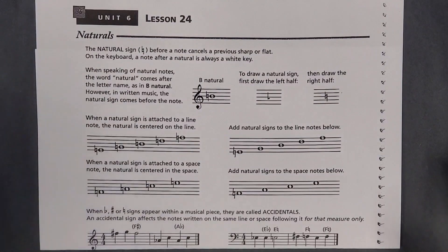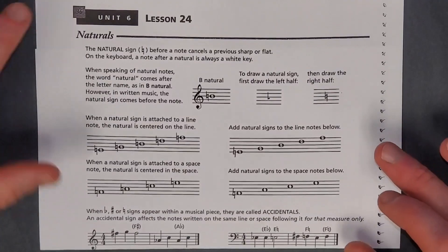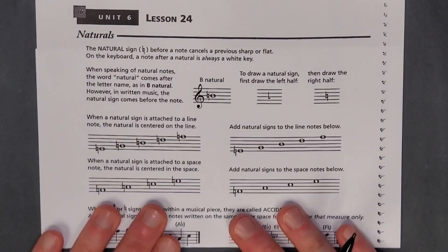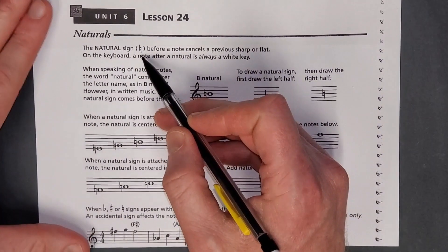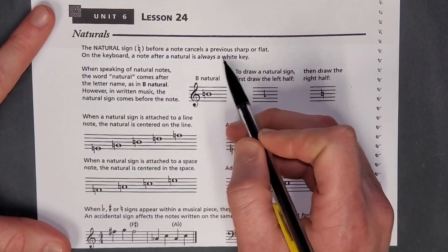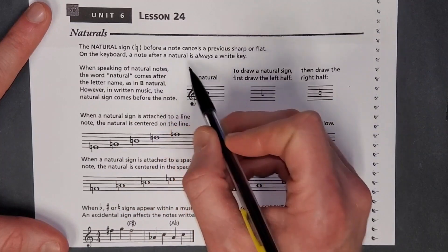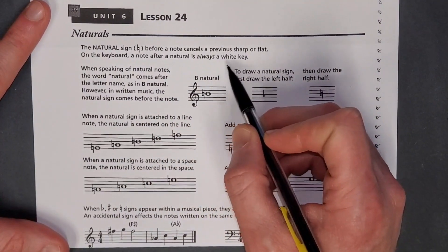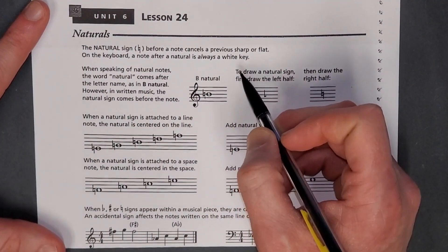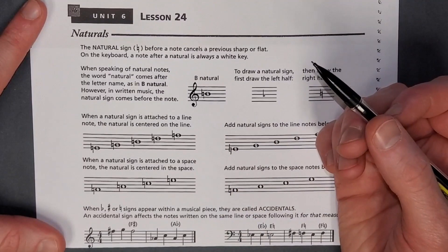Let's get right into it. Today we are talking about naturals. A natural sign looks like that before a note cancels a previous sharp or flat. On the keyboard, a note after a natural is always a white key. Black keys are never considered natural.